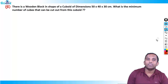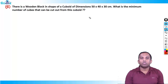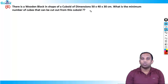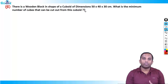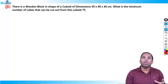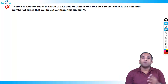The question says: there's a wooden block in the shape of a cube void of dimensions 50 × 40 × 30. What is the minimum number of cubes that can be cut out from this cube void? Every time you cut a cube, it should be of maximum size, so that when the whole material is finished you get the minimum number of cubes.